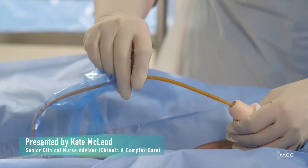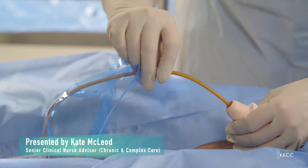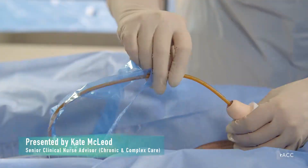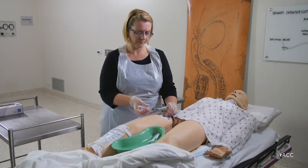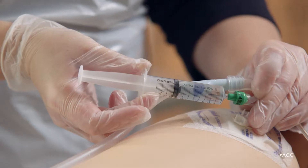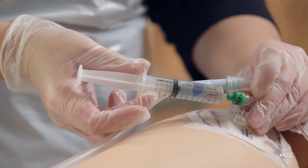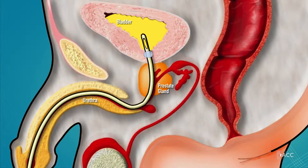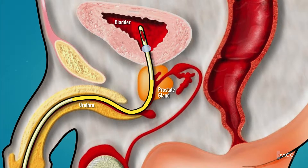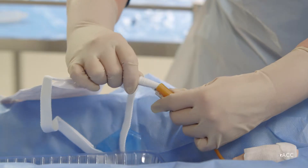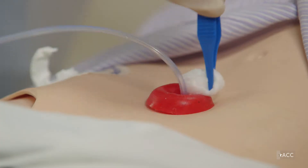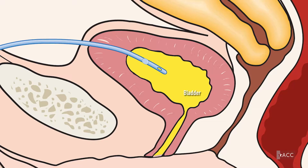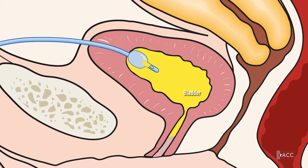A urinary catheter is a hollow tube inserted into the bladder to drain urine. Urinary catheterisation is the passage of a urinary catheter into the bladder via the urethra, which is called urethral or indwelling catheterisation, or through the abdominal wall, which is called suprapubic catheterisation.